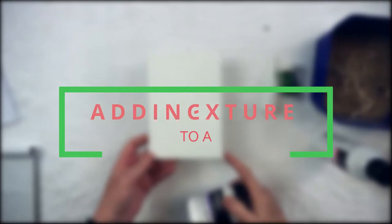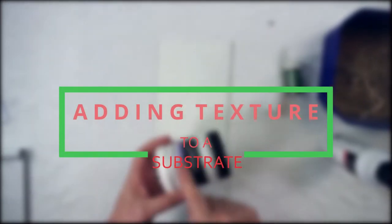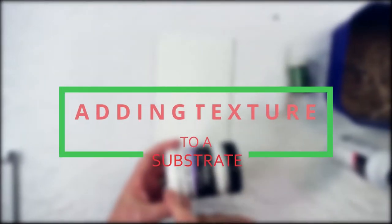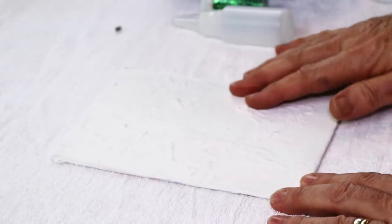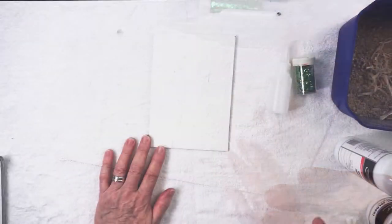To add texture to substrate, if you want a fairly high level of texture you can put your gel gloss - either heavy, regular, or satin - down and you can impress that with sand or gravel. But if you want a slightly lower level, binder medium works exactly the same.